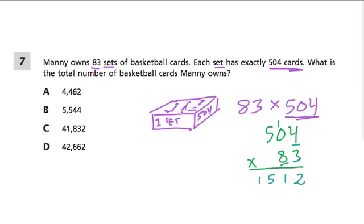Now we're multiplying tens out, because that's really 80, so we want to put a placeholder there, and 8 times 4 is 32. So you can think of this as 32. Cross this out. 8 times 0 is 0, plus 3 is 3, and 8 times 5 is 40.